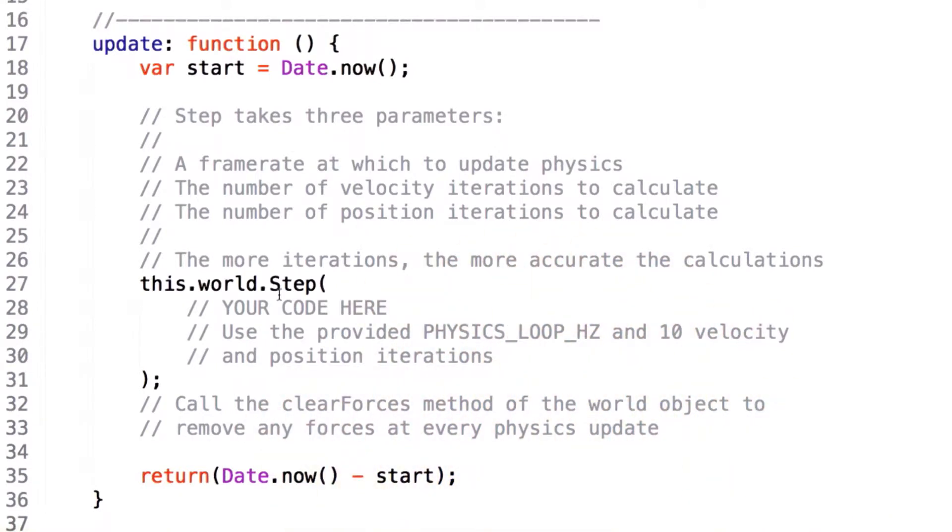For our purposes, we make the assumption that the game is running at a solid 60 frames a second. Thus, we expect the update loop to be called 60 times a second, giving us the time slice value of 1 over 60.